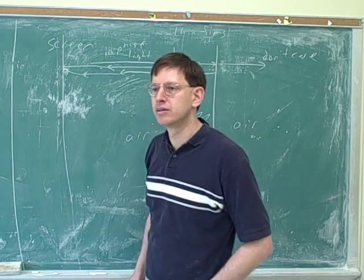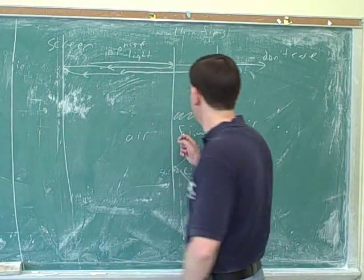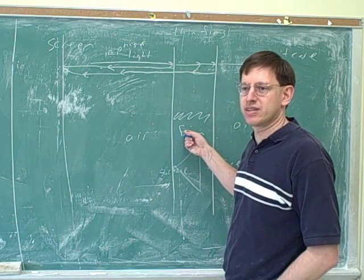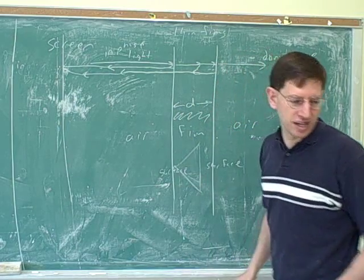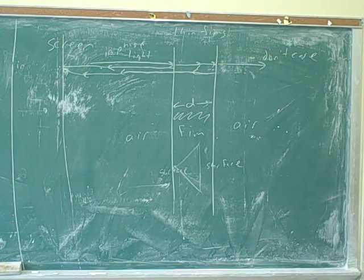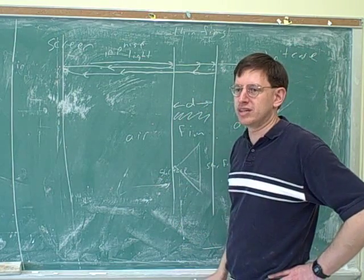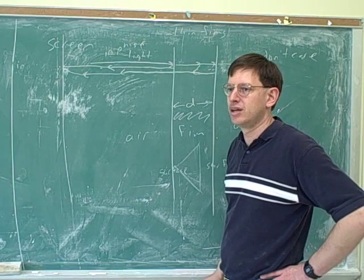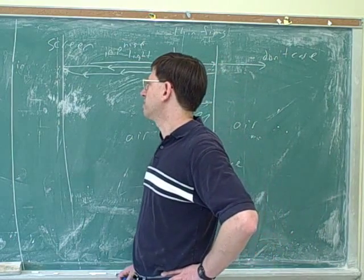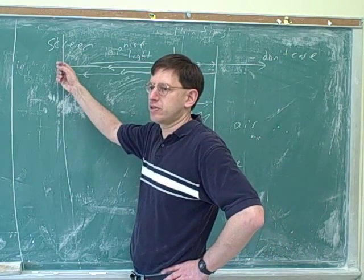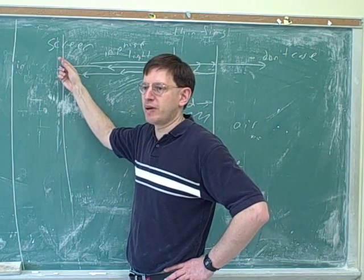So the path length difference is the distance in the film. You can use the distance in the film to figure out the path length difference. If this distance is d, then the path length difference would be 2d — that's a common mistake. So the total path length difference would be 2d. And we can use that path length difference to determine whether the two beams come together on the screen in phase or out of phase. If they're in phase, we get a bright spot; if they're out of phase, we get a dark spot.